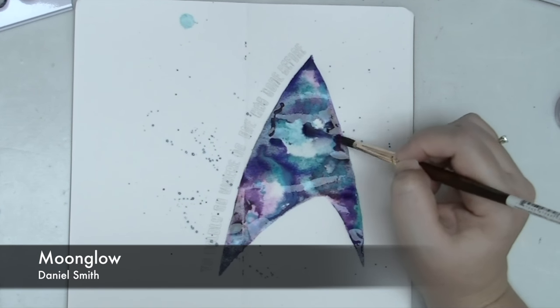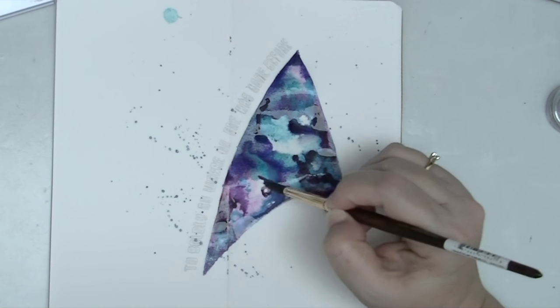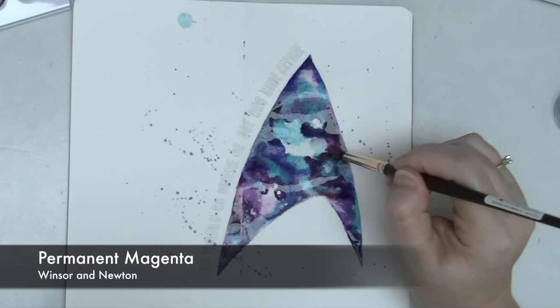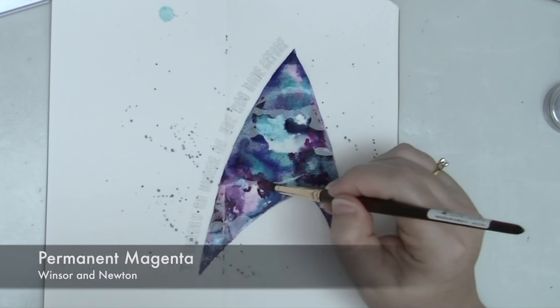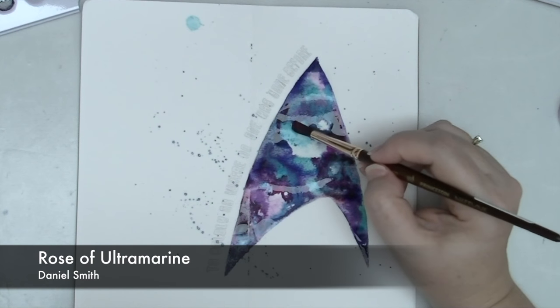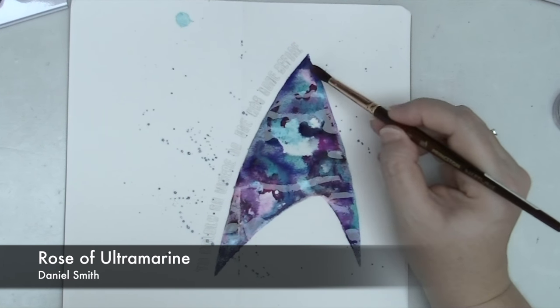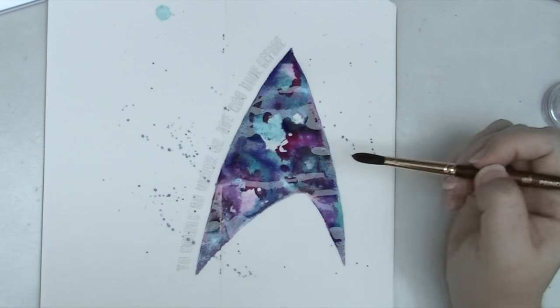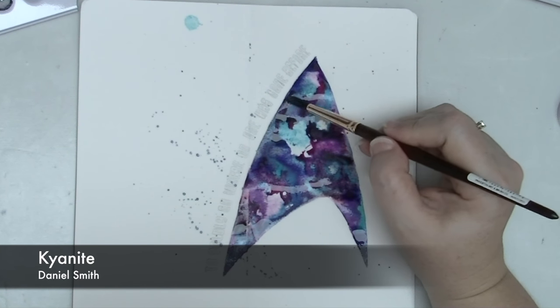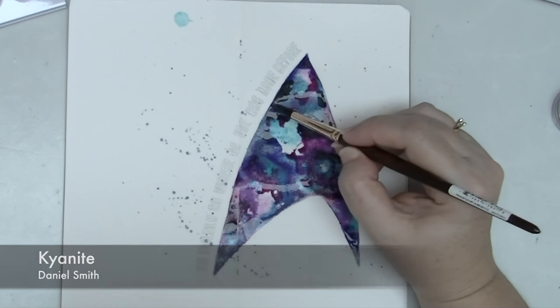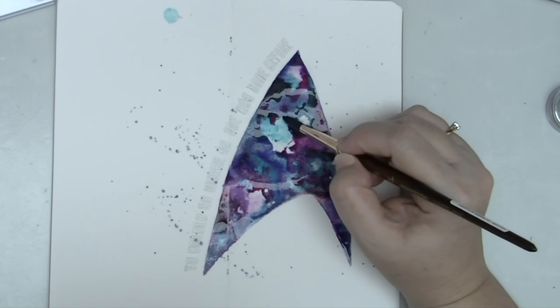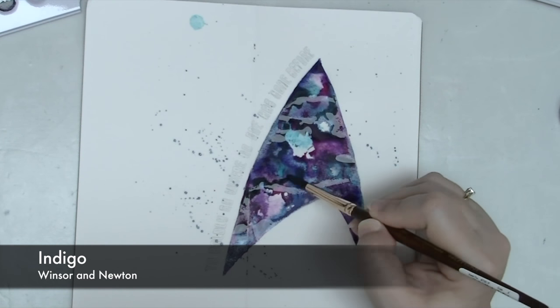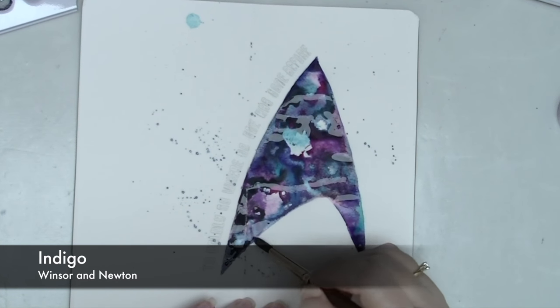A little bit more moon glow and again applying this quite thickly and just dabbing it on. Now you can see the depth of color starting here but I wanted something a bit more interesting so I've applied some permanent magenta and then some gorgeous pink rose of ultramarine. Now again I haven't mixed this with much water so it's quite concentrated. I'm going back in with a little more kyanite to add a bit more dark a bit more depth to some of those areas and some indigo from Windsor & Newton.